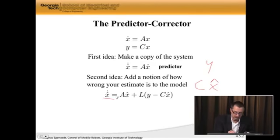So I'm going to add a piece to my predictor. x hat dot is Ax hat plus this difference, y minus Cx hat, which tells me how wrong I am. And then I add some gain matrix here, L. And this gives me a predictor and a corrector.